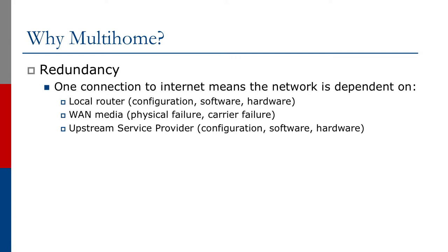What about the WAN media? This is the link between your network and the upstream provider. It could be a physical failure or a carrier failure. Physical failures are entirely possible — somebody cutting the fiber optic cable, something going wrong with the copper, cables getting dug up, cut up, or even stolen. People may believe fiber optic is copper and think it has value, and when they discover it's glass, the damage has been done. It could also be a carrier failure if you're dependent on the upstream provider's layer two infrastructure — if that breaks, you have no connectivity to the internet until the carrier fixes it.